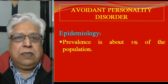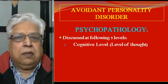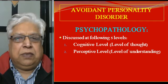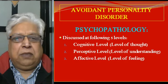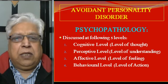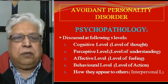The prevalence is about 1% of the population, and the male-female ratio is almost equal, 1 to 1. We are going to discuss its psychopathology under the following five levels: cognitive level or level of thought; perceptive level or level of understanding; affective level or level of feeling; behaviour level or level of action; and the last is how they appear to others — that is the interpersonal level.